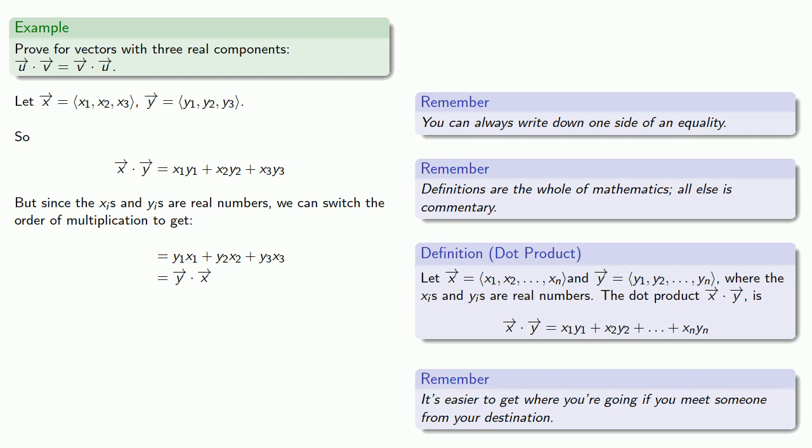Now, one important thing, proofs have to be able to be read front to back, which means we have to be able to start at the starting point and end with our conclusion.